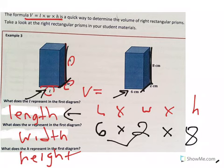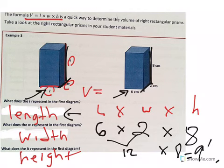Okay. And if we were to solve that, of course, we could do 6 times 2 is 12, times 8, going to give us 96 centimeters cubed because it is volume.